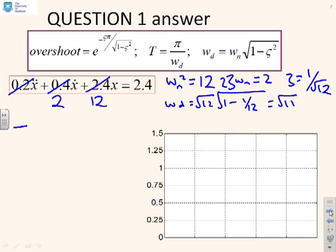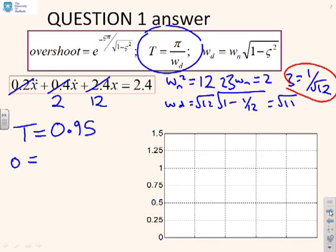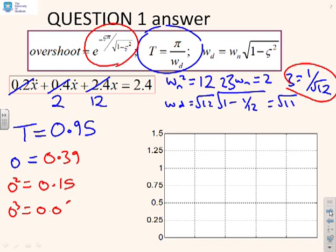I can go over here. I can get the time using this formula here, π over ωd, and that gives me 0.95. And I can get the overshoot again by plugging in this ζ value into this formula here. And what do I get? An overshoot of 0.39. Overshoot squared is going to be 0.15, overshoot cubed 0.06. And in this case, I can even go up to overshoot to the 4, 0.02.